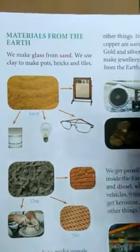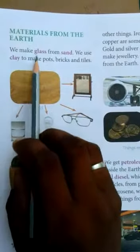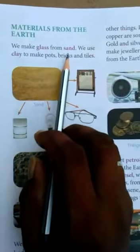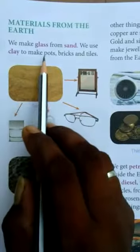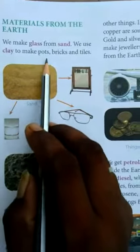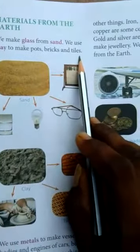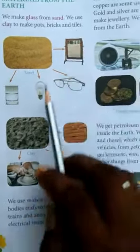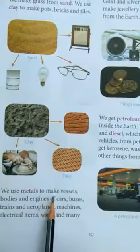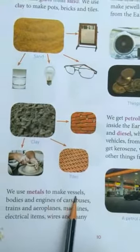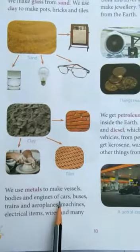Materials from the earth. We make glass from sand. We use clay to make pots, bricks and tiles. We use metals to make vessels, bodies and engines of buses, trains and aeroplanes.